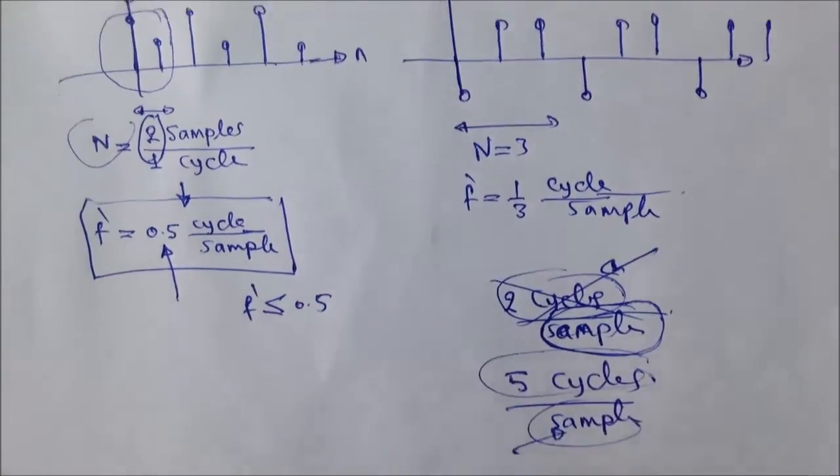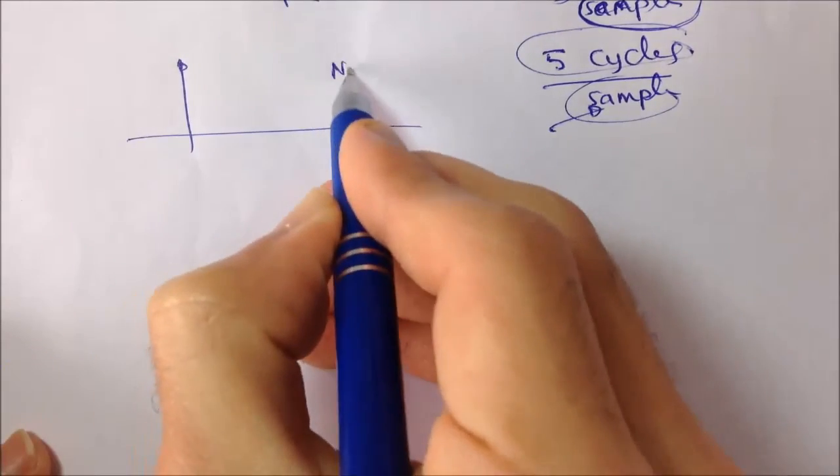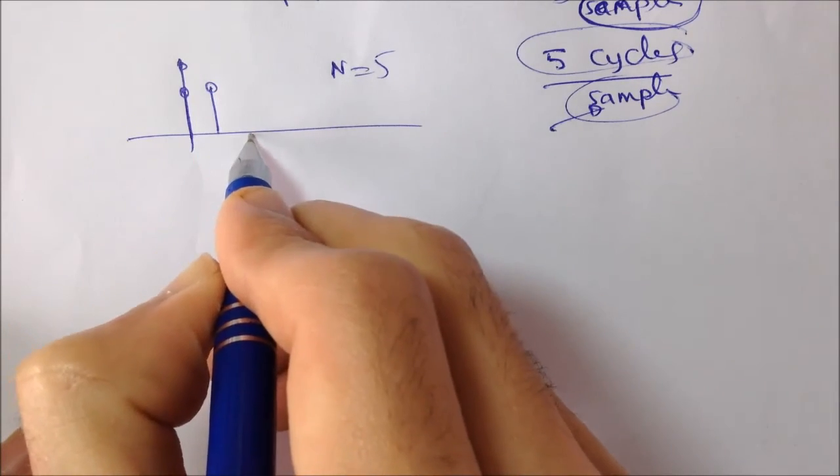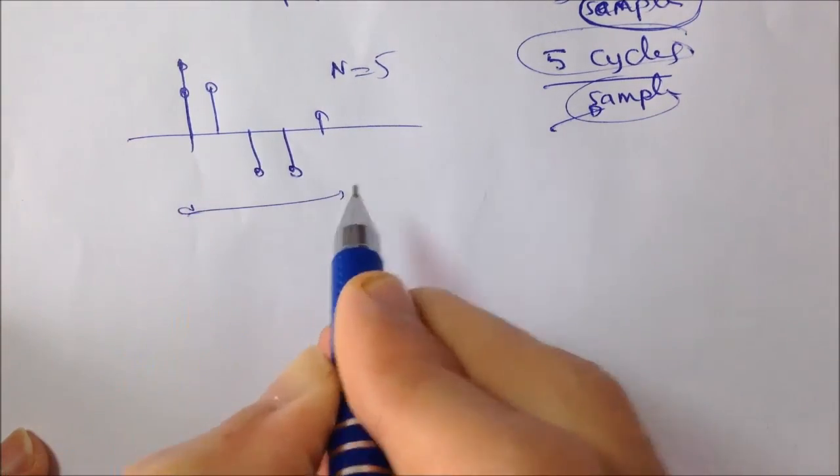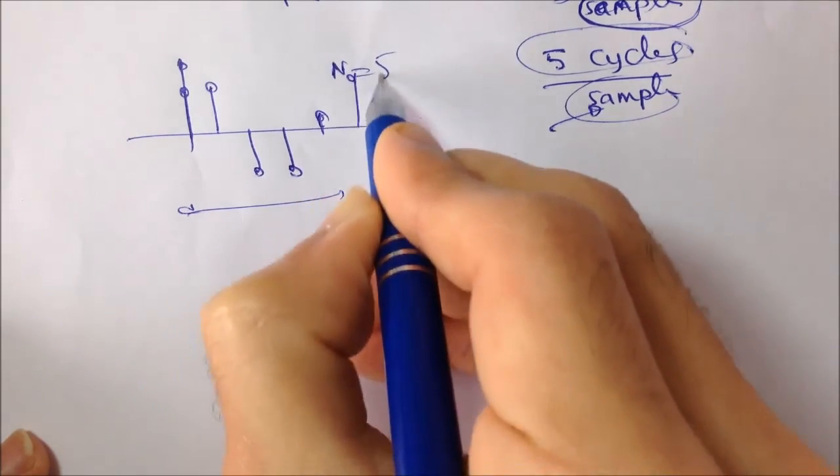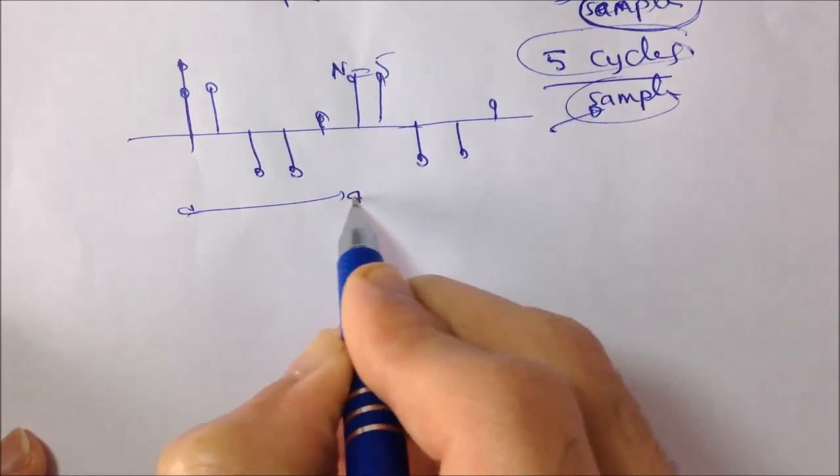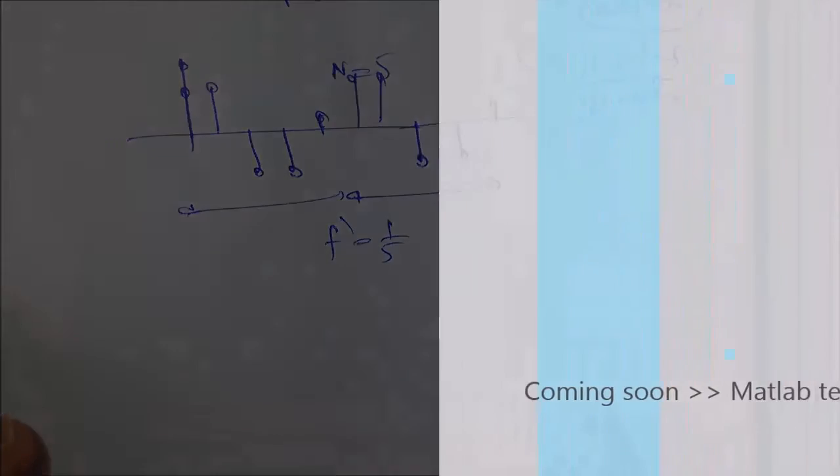You can think of a discrete signal that has n larger than that. But, for example, n equals 5. So, each 5 samples, like this, complete one cycle. And then this repeats itself. This is another cycle. So, f prime is 1 over 5.